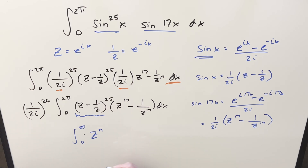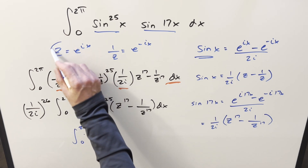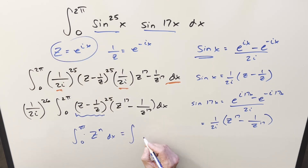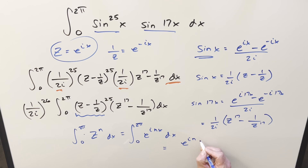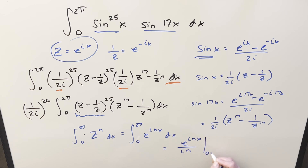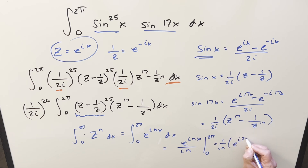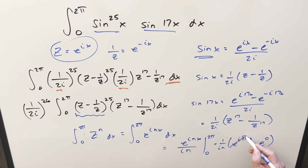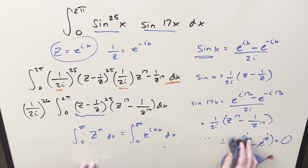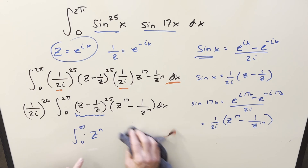With the definition z = e^(ix), z^n is the same as e^(inx). When you integrate this, where n is an integer, you get e^(inx) divided by the constant in the exponent, evaluated from 0 to 2π. When you evaluate, you get e^(i·2πn) minus e^0. But e^(i·2πn) equals 1 by Euler's formula, and e^0 is 1, so the whole thing goes to 0. Basically, a whole bunch of terms vanish — except when the exponent n equals 0.